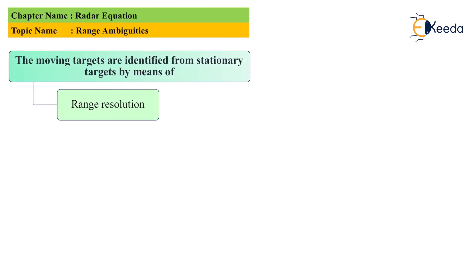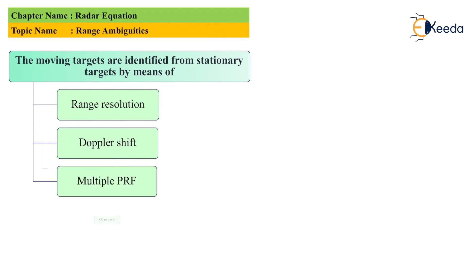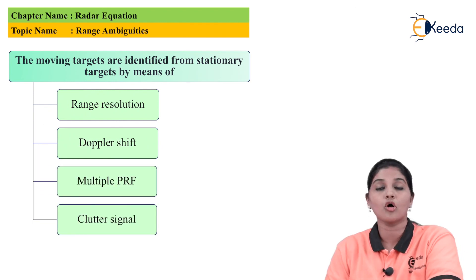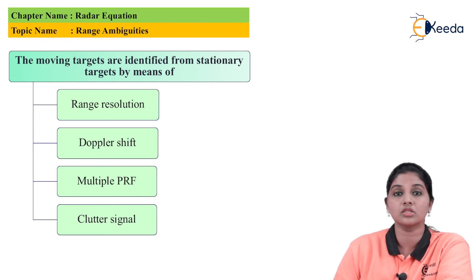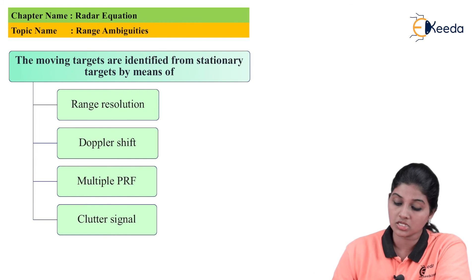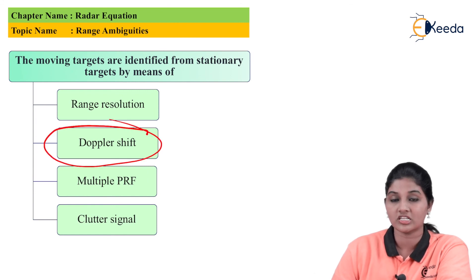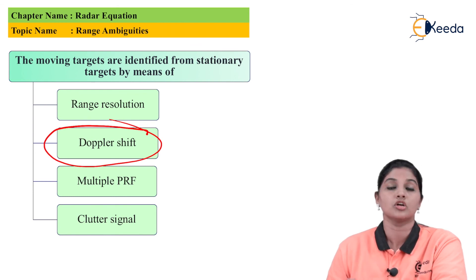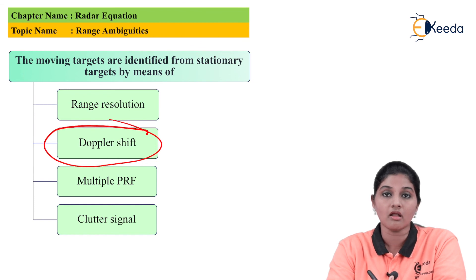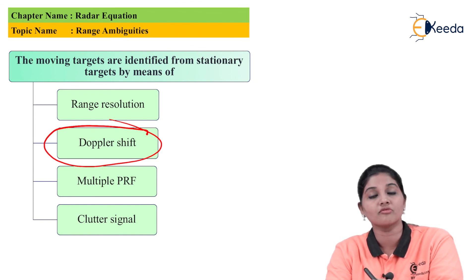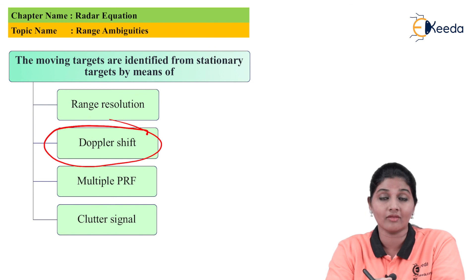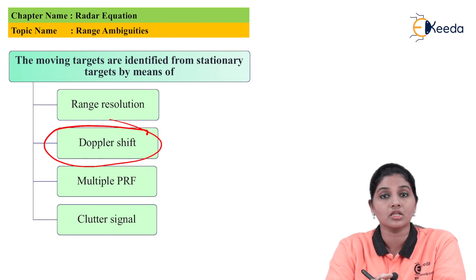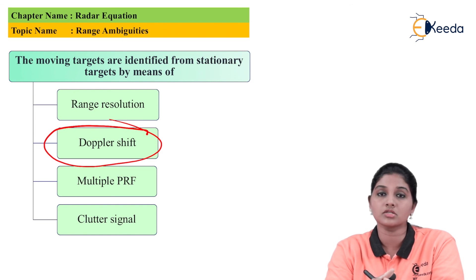The second question: moving targets are identified from stationary targets by means of — option A: range resolution; option B: Doppler shift; option C: multiple PRF; option D: clutter signal. The Doppler shift is used to differentiate between stationary and moving objects, so option B is the correct answer. By changing the value of PRF we can determine the range ambiguities in range and Doppler.